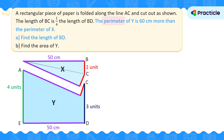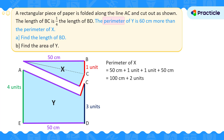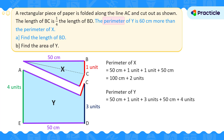Let's start with X. To find its perimeter, we're going to add all its sides. The perimeter of X is 50 centimeters plus 1 unit plus 1 unit plus 50 centimeters, which works out to be 100 centimeters plus 2 units. For Y, the perimeter is 50 centimeters plus 1 unit plus 3 units plus 50 centimeters plus 4 units, which is the same as 100 centimeters plus 8 units.